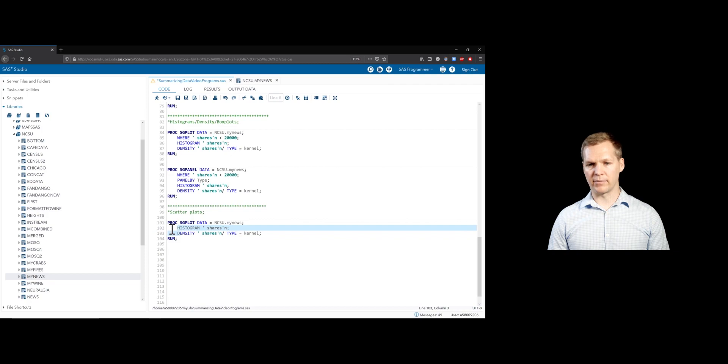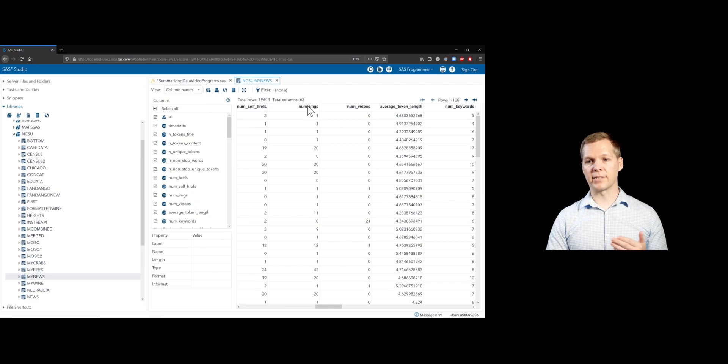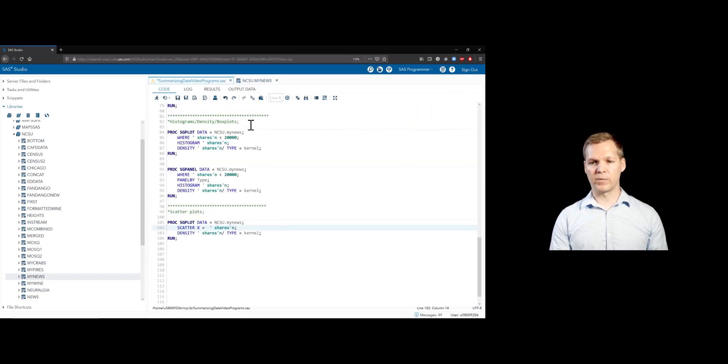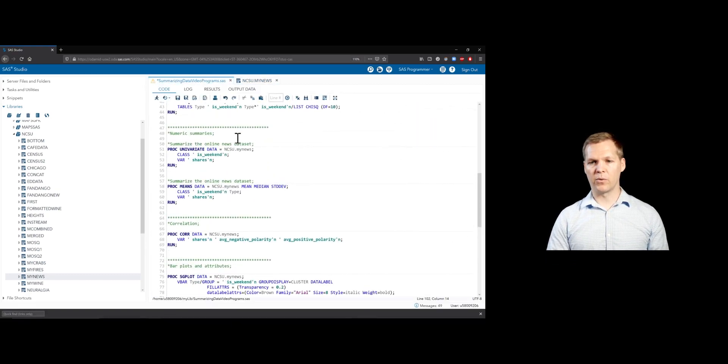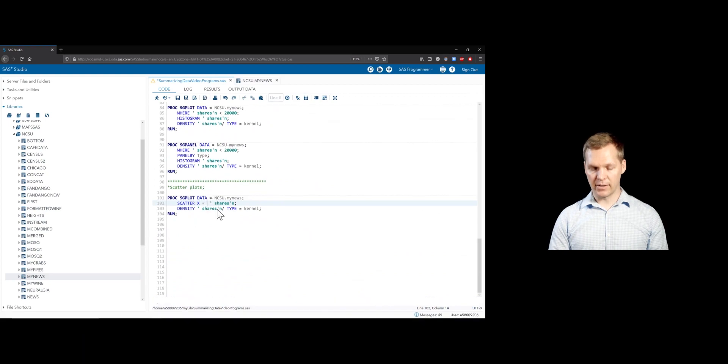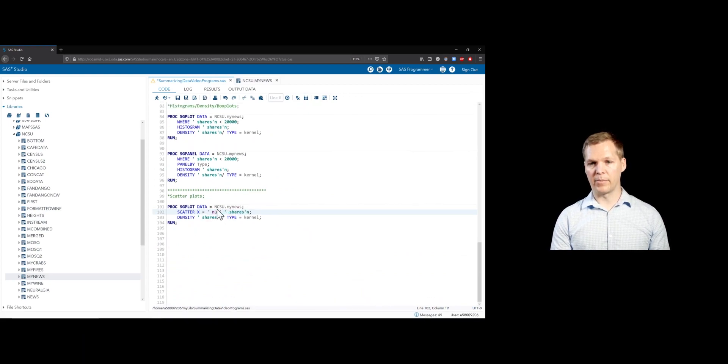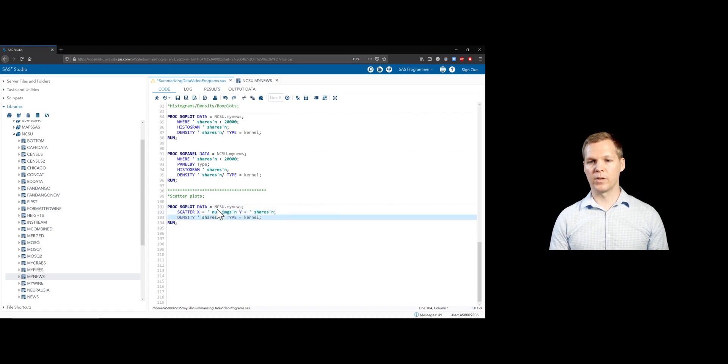And now we'll go with a scatter statement here. And our x variable will be our, not our shares variable, because that's our response variable, we'll usually put that on our y axis, but num images will go here. So we still got to use this weird way of accessing it. We'll have num images. And then our y variable will be the shares.